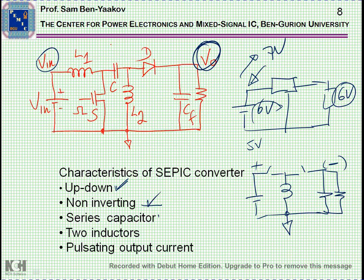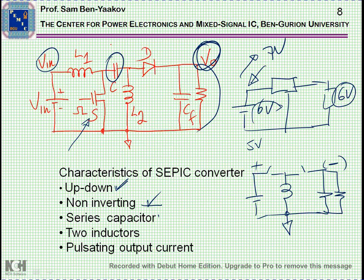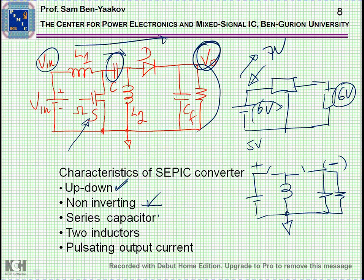There is a series capacitor — this capacitor here, with a plus and a minus. The plus is that it provides a sort of isolation between the input and output. For example, if you have a short circuit at the output and you detect it and block the switch operation, nothing will happen because this capacitor prevents DC current from flowing from input to output — which is very nice. On the other hand, an extra capacitor is expensive, and also all the current passes through it, requiring a capacitor that can carry high current, which makes it more complex. So the series capacitor is really both a plus and a minus in the circuit.